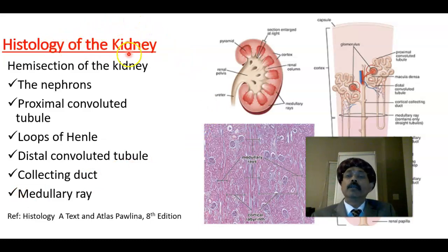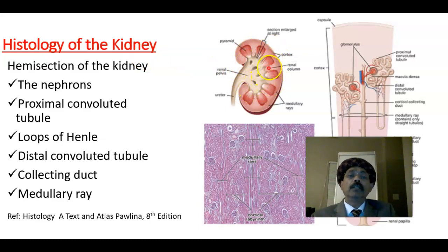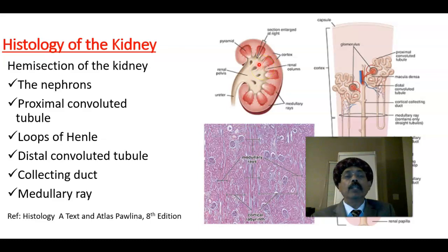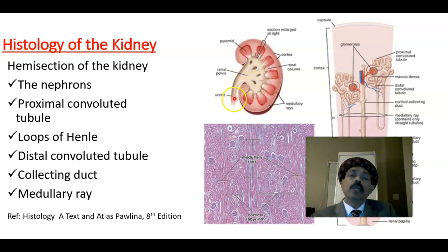In the histology of the kidney, if we have a hemi-section, we'll get the cortex and medulla. The medulla has the pyramid, and the cortex is lined by a connective tissue capsule. Cortical tissue goes in between the pyramids — we call it the renal column. At the tip of the pyramid, we have the renal papilla that opens into the minor calyx, which opens into the major calyx. These unite to form the renal pelvis and the ureter.